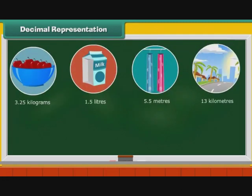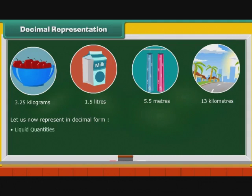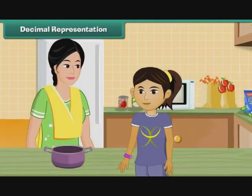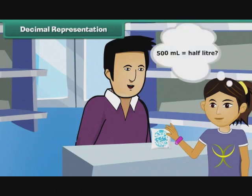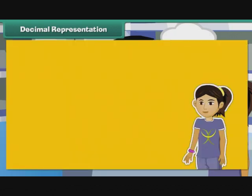Decimal Representation. In real life, we use decimals extensively to express quantities and lengths. Let us now represent in decimal form: liquid quantities, solid quantities, and lengths. Savita's mother asked her to get a half litre milk pouch from Mother Dairy. When she went to buy it, the person at the booth handed her a 500 ml pouch. Savita was confused. Is 500 ml the same as half litre? To be able to answer this question, we must first understand the units used to measure liquids.